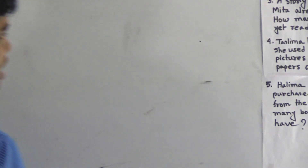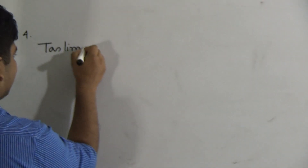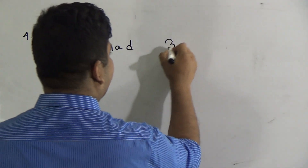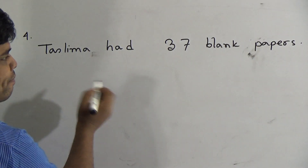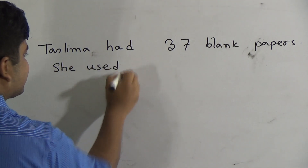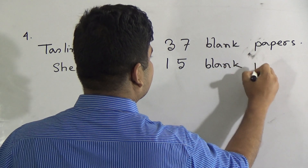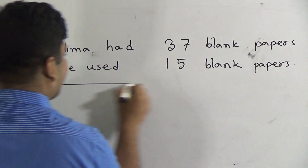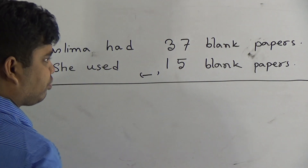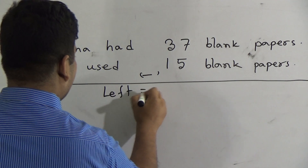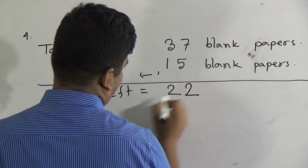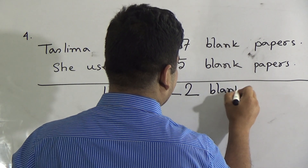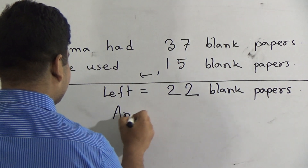Taslima had 37 blank papers. She used 15 blank papers to draw. Now we do subtraction to find the pages left: 7 minus 5 equals 2, and 3 minus 1 equals 2. So 22 blank papers are left. As our solution is done, we must write the answer: 22 blank papers.